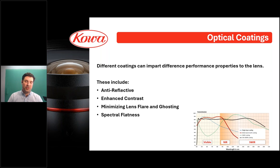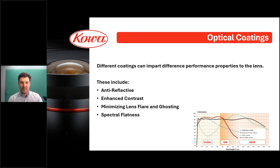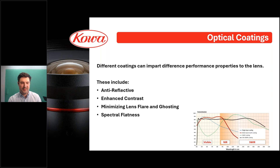Coatings can also minimize lens flare and ghosting. Since we're capturing images and converting them into spectra, flare and ghosting will show up as artifacts in your spectral data. Additionally, some coatings are designed to ensure flat wideband transmission — for example, this vis-SWIR coating, which is really good for hyperspectral imaging, ensures transmission will be very flat across the whole band. This makes calibrating your data easier and gives you a nice consistent signal. Ensuring your lens coatings are suitable for the intended spectral range will help you achieve more reliable imaging results.